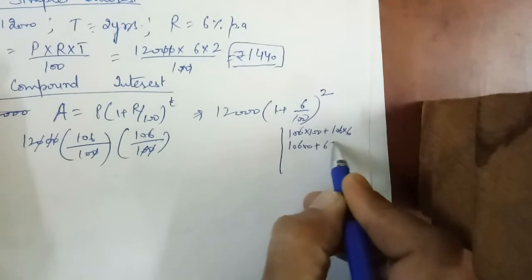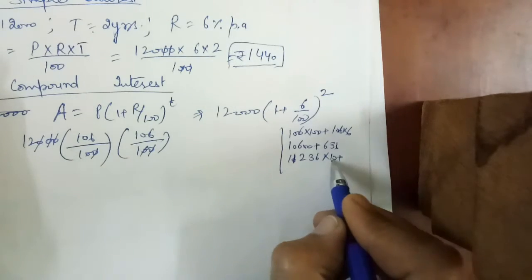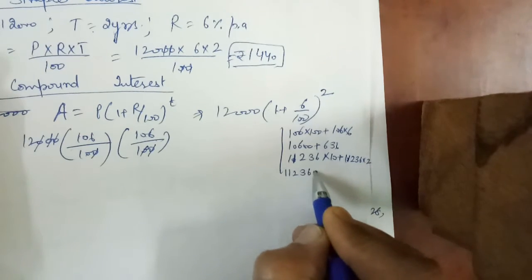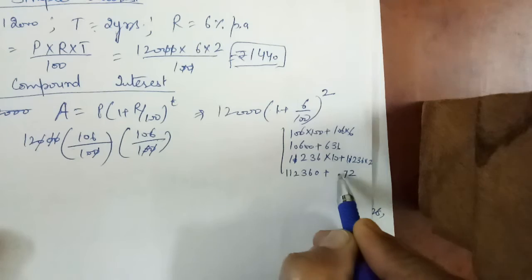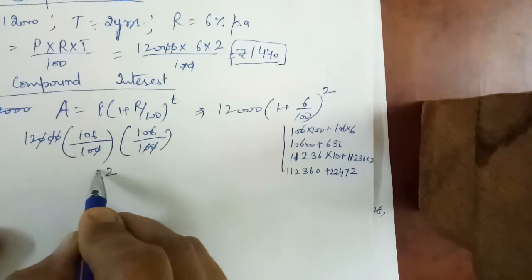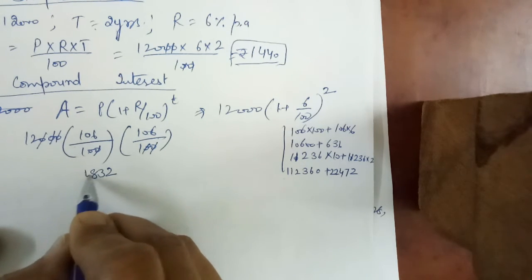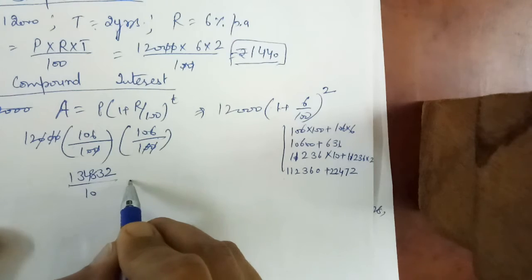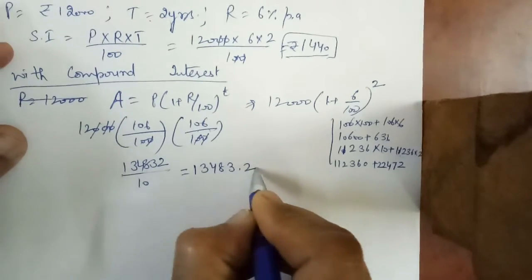Computing (106/100)^2: 106 × 106 gives 11,236. Dividing appropriately and multiplying by 12,000 gives 13,483.2. So the amount under compound interest is ₹13,483.2.